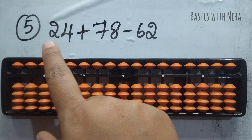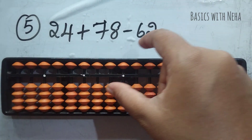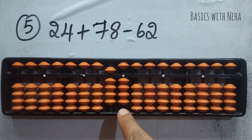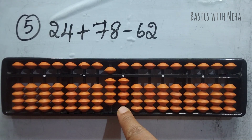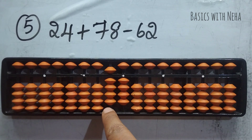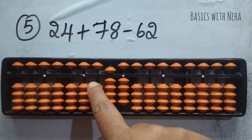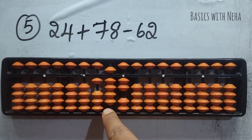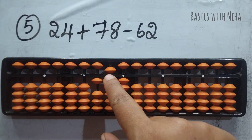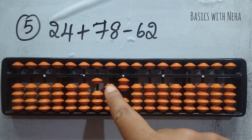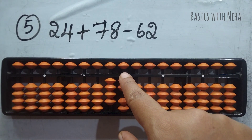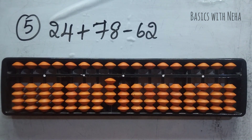Fifth question: 24 plus 78 minus 62. Take 24. Add 78 — 7 I can add directly. To add 8, beads are not available; use the big friends formula: plus 10 minus 2. Plus 10 not available here, so jump this rod and do plus 10 on the next rod, then come back to ones place and minus 2. Remove everything from the jumped rod. Now minus 62 — minus 6 is minus 10 plus 4; I can do minus 10 plus 4, then minus 2 directly. My answer is 14.